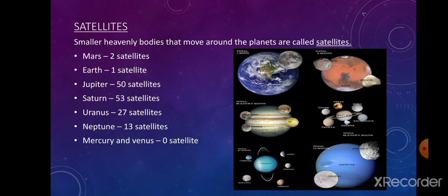Planets in the solar system have a certain number of natural satellites. For example, Mars has two satellites, Earth has one satellite, Jupiter has 50 satellites, Saturn has 53 satellites, Uranus has 27 satellites, Neptune has 13 satellites, while Mercury and Venus do not have any satellites.